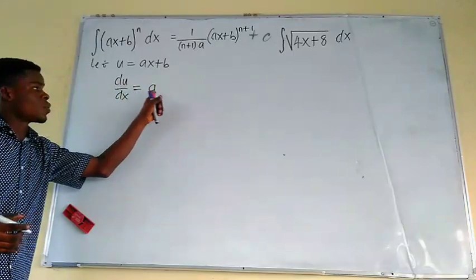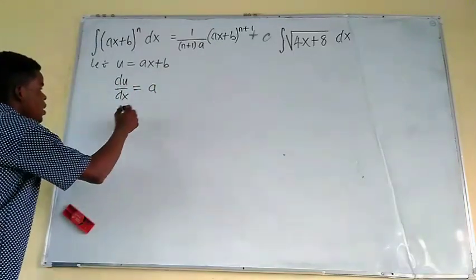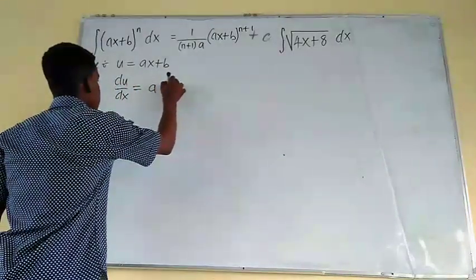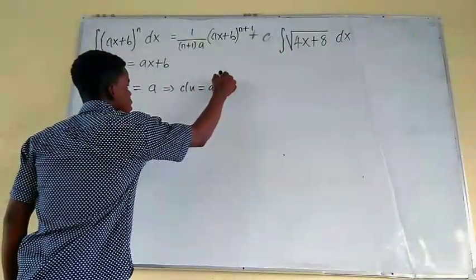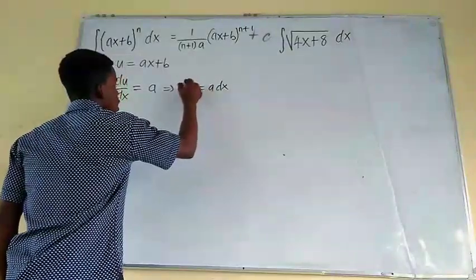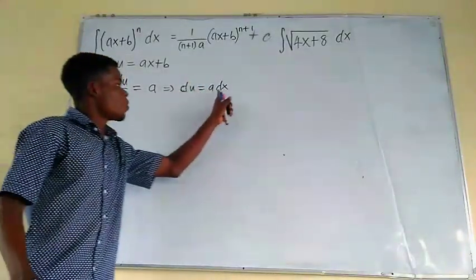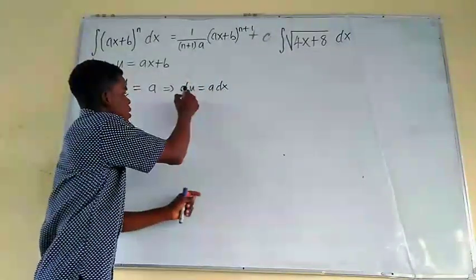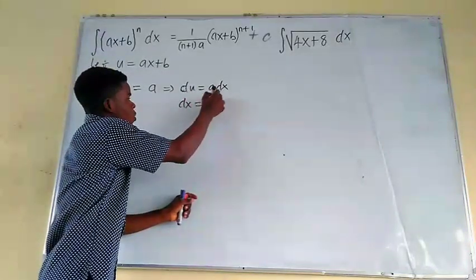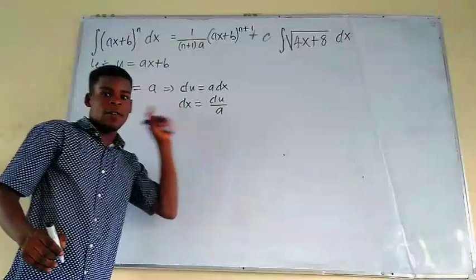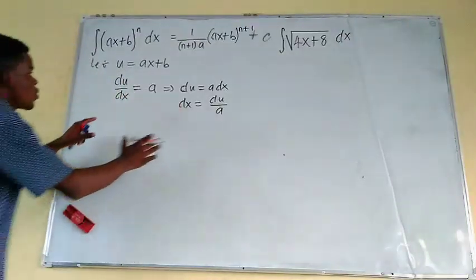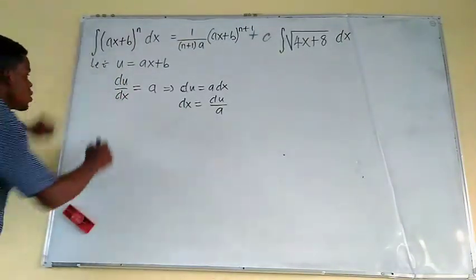So dU/dX is equal to A. Then that simply means that DU is going to become A·DX. And because DU is going to become A·DX, that simply means that DX is going to become DU divided by A. That's just dividing A on both sides. So we're going to use all these parameters to substitute in here.